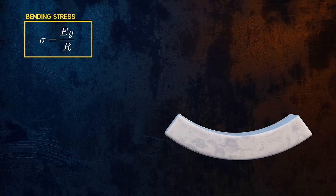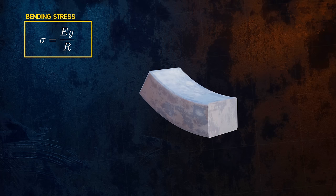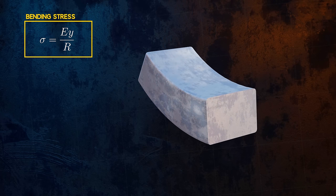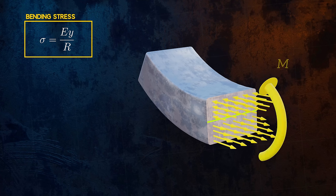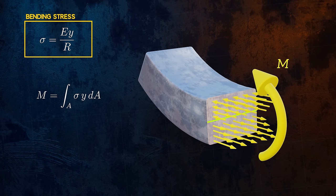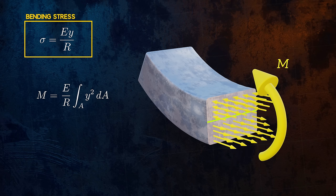If we make an imaginary cut through the beam, we can expose the internal bending stresses, represented here as a few discrete forces. The resultant moment of these internal forces must be equal to the bending moment M, and so we can calculate M by integration. Now we can plug in the equation for bending stress we just derived. When rearranged into this form, we can notice that the integral on the right is the definition of the area moment of inertia.